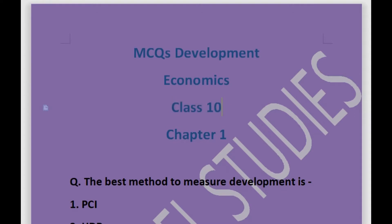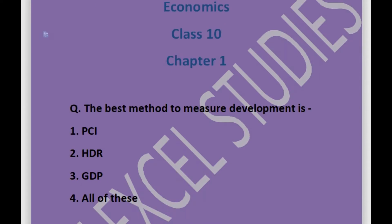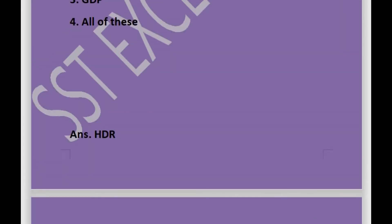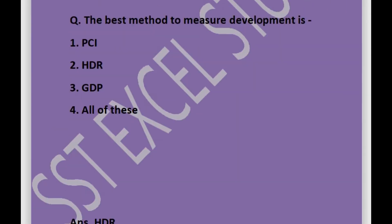Our first question is: the best method to measure development is — options are PCI, HDR, GDP, or all of these. Answer is HDR. HDR stands for Human Development Report.